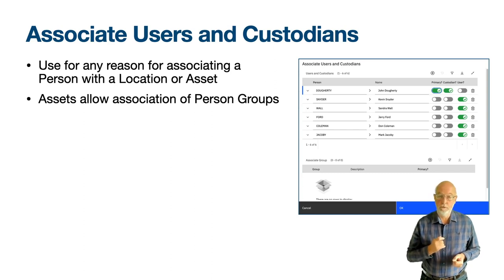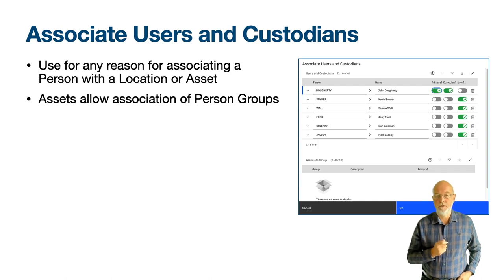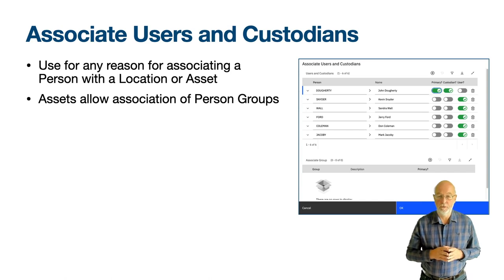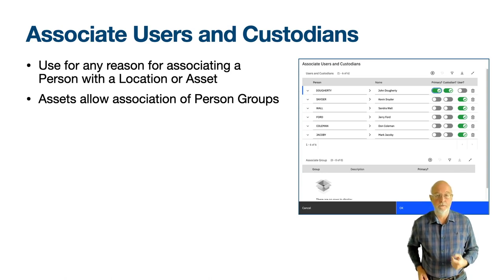Bear in mind that if you use this feature for assets, you needn't use it for all asset types — it may only be relevant for some. In the assets application, the associate users and custodians action opens a dialogue with two table windows: users and custodians, and associate group. In the locations application, the action will have the top table window but not the ability to associate multiple person groups.